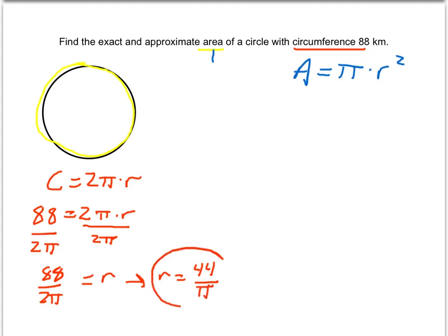So now we take this radius and we'll substitute it into the area formula. So the area is π times radius squared, and our radius is 44 divided by π. So radius squared.